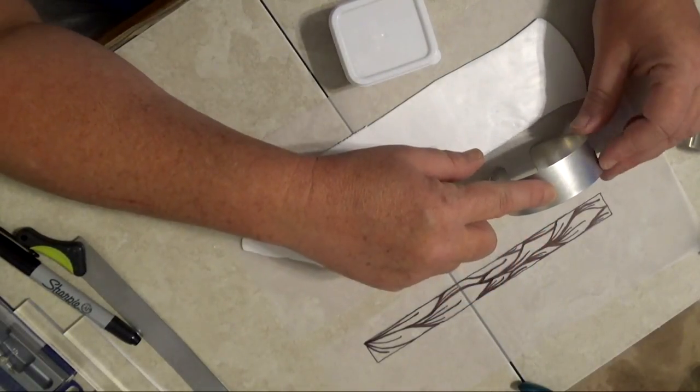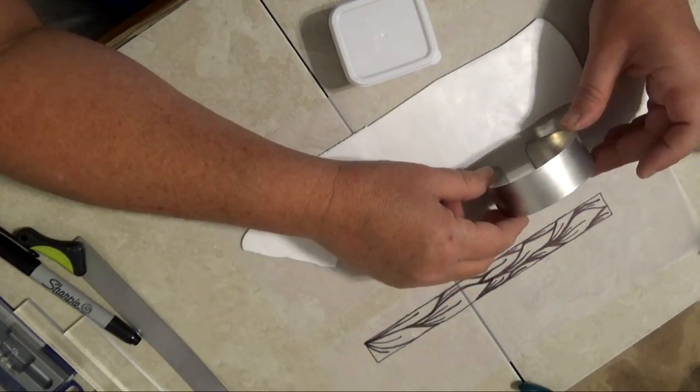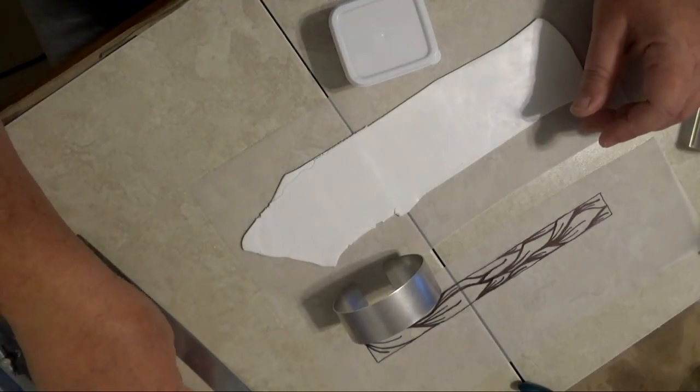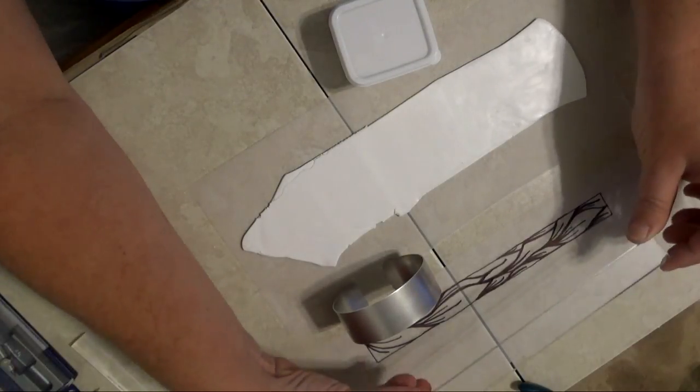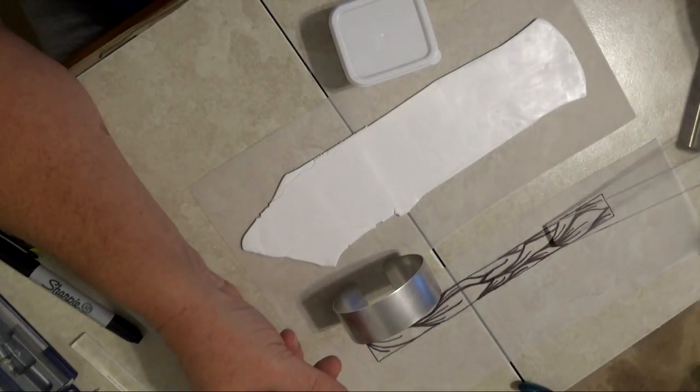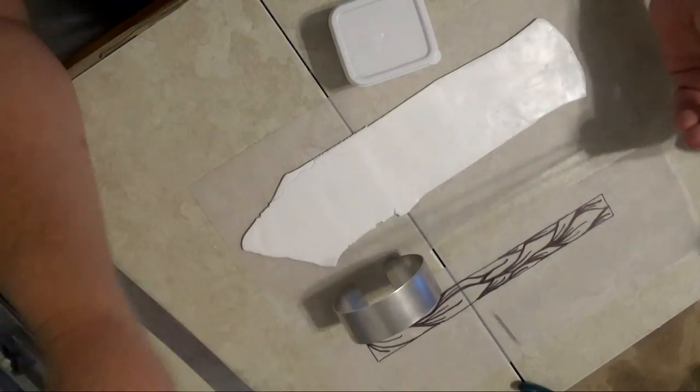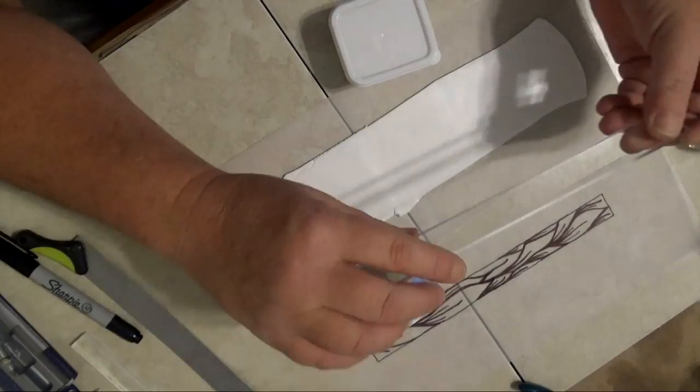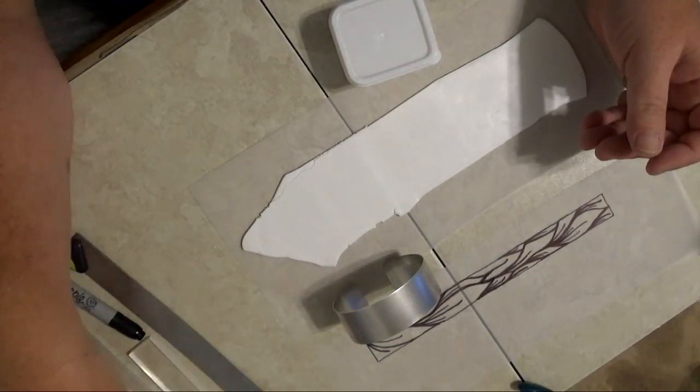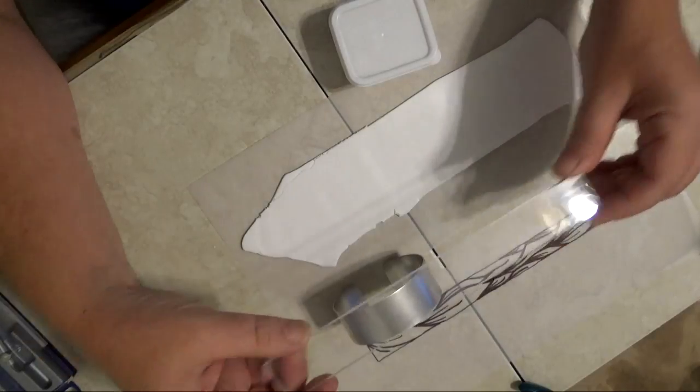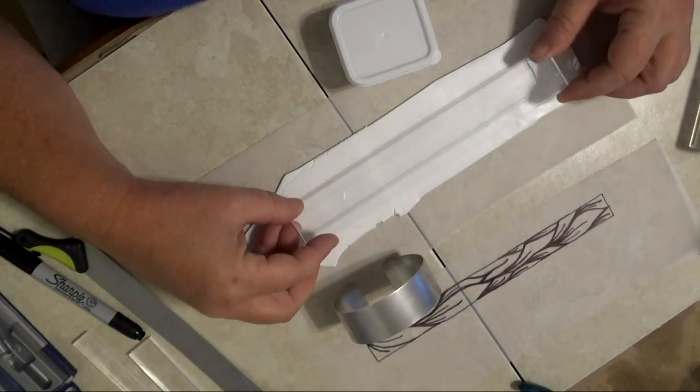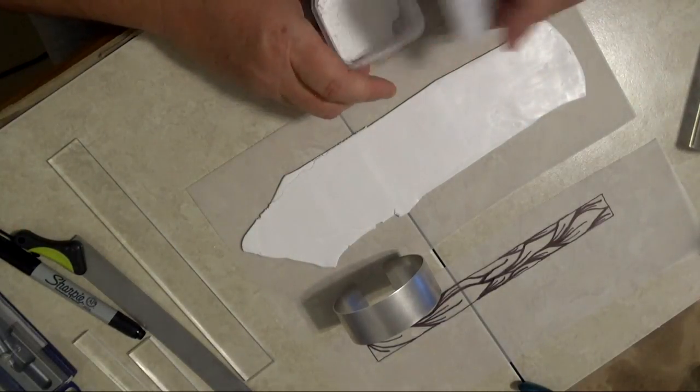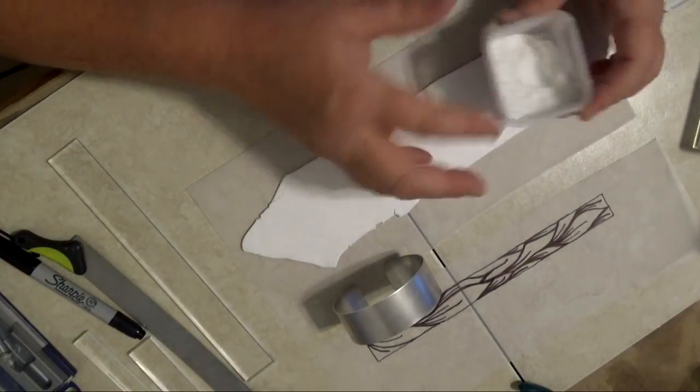I'm going to use the widest bracelet in the Easy Cuff kit, the widest bracelet blank, but my drawing was made with the template for the midsize bracelet because I don't want my drawing to go edge to edge. I'm going to use the widest template, the one that goes with the widest bracelet blank, and cut out the clay.